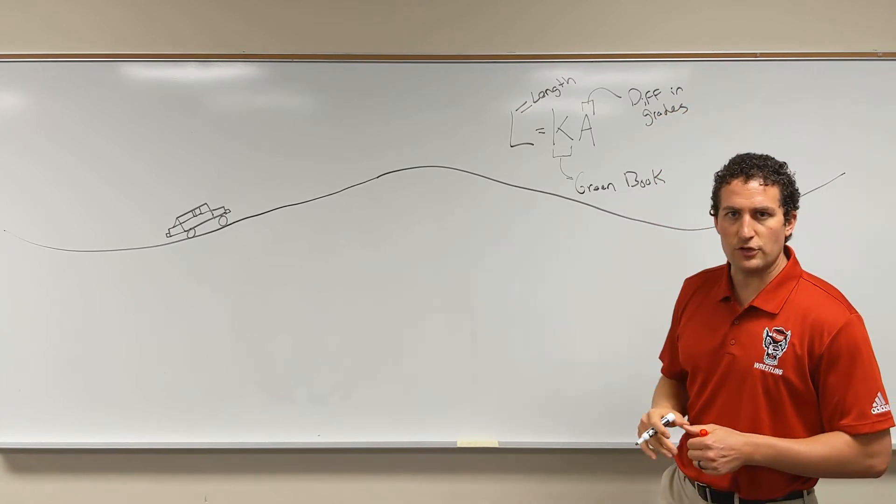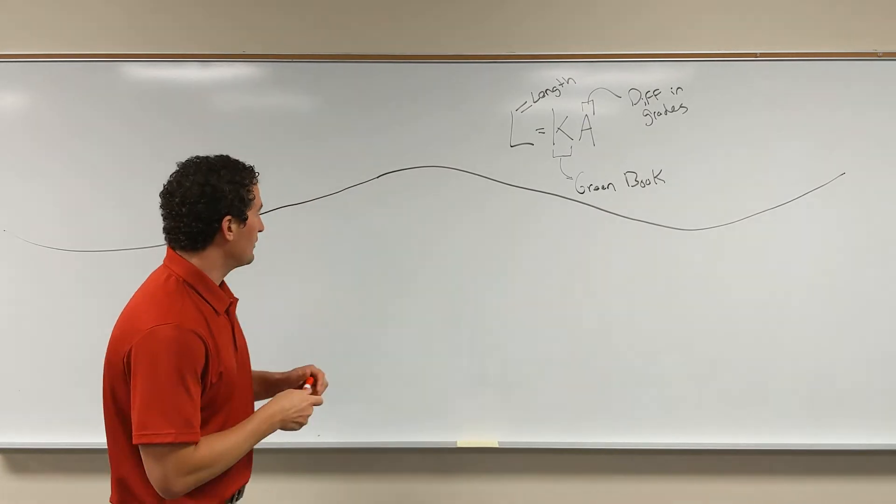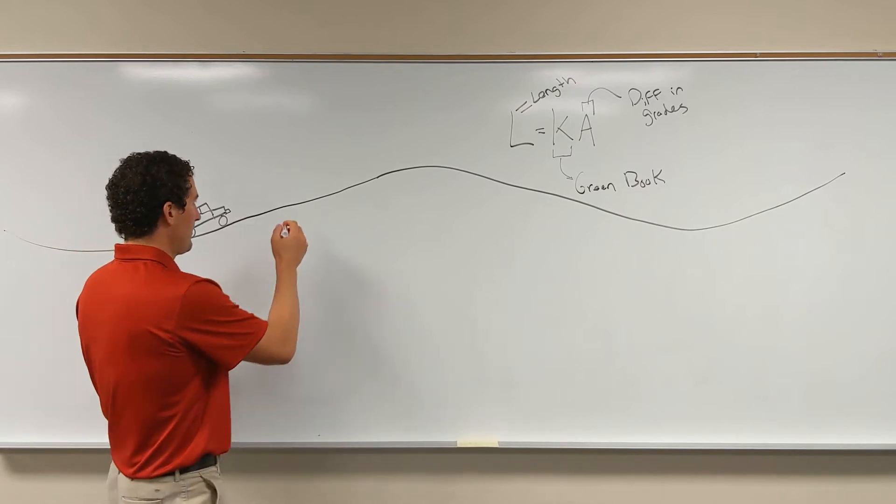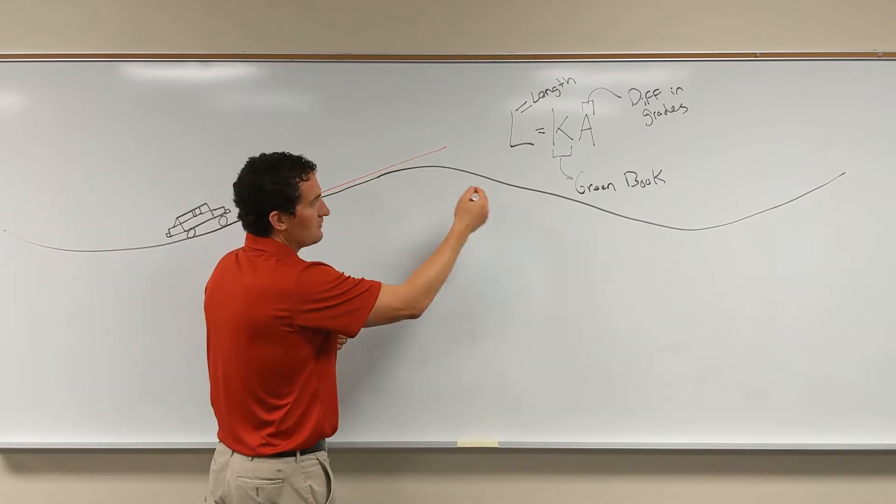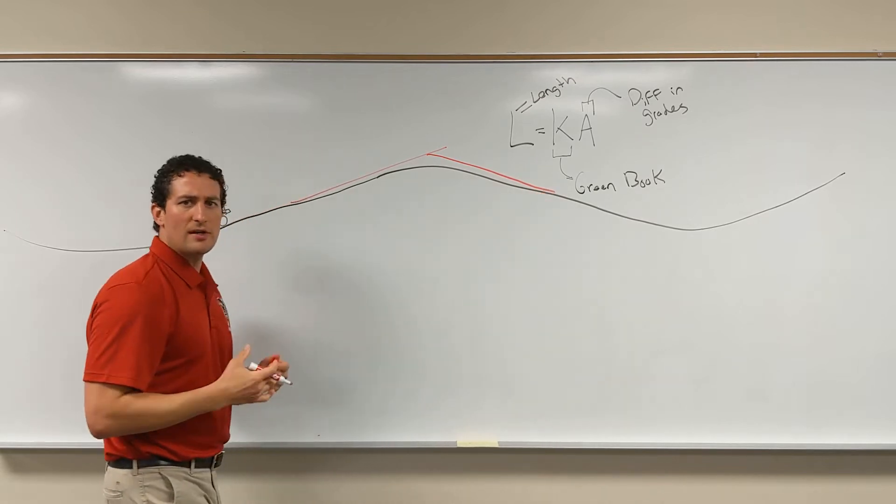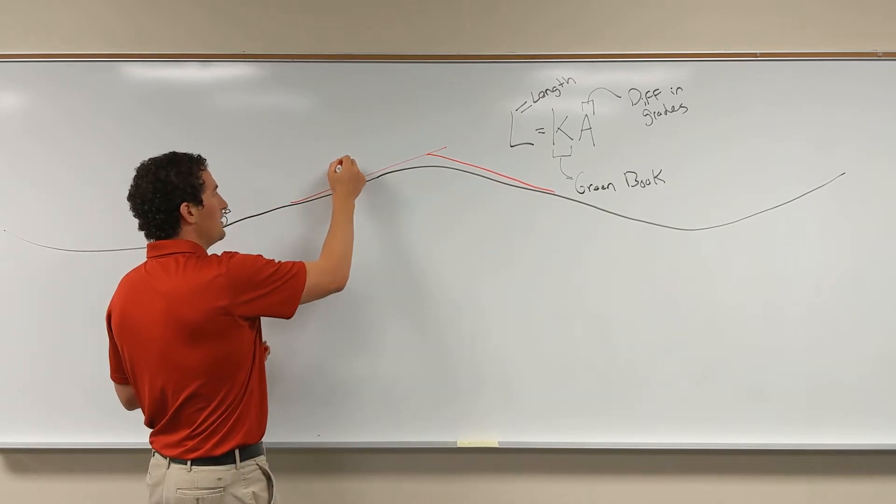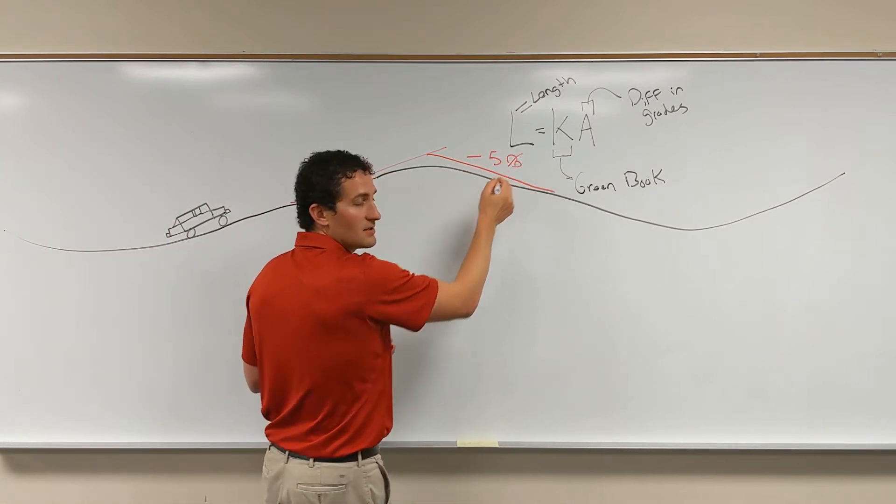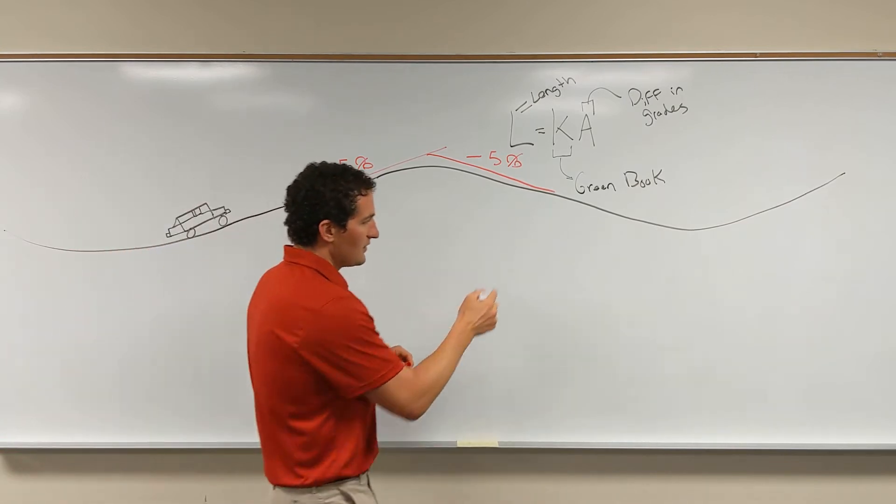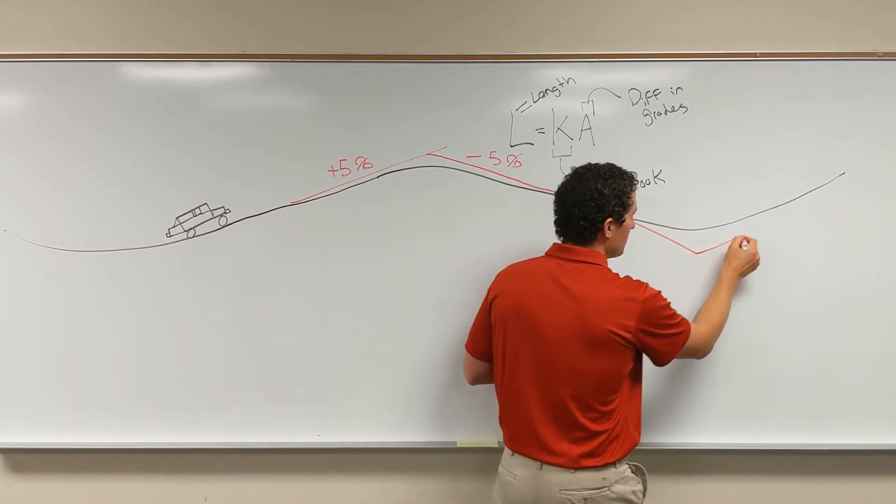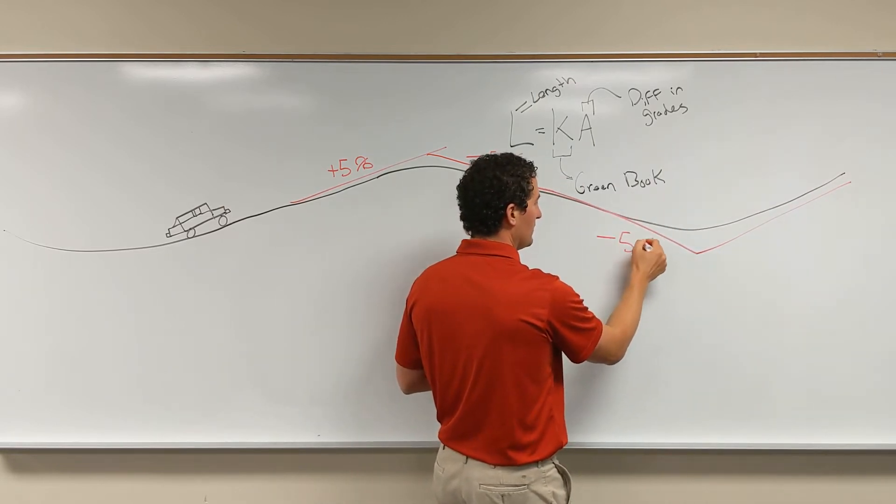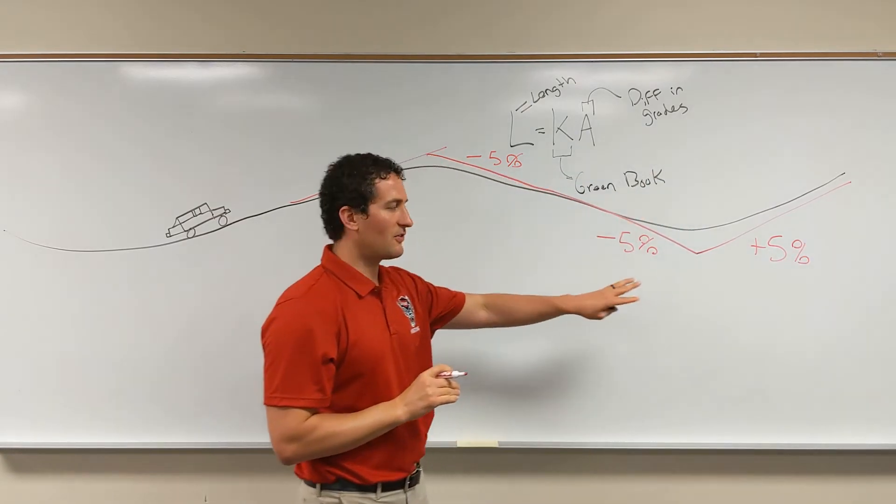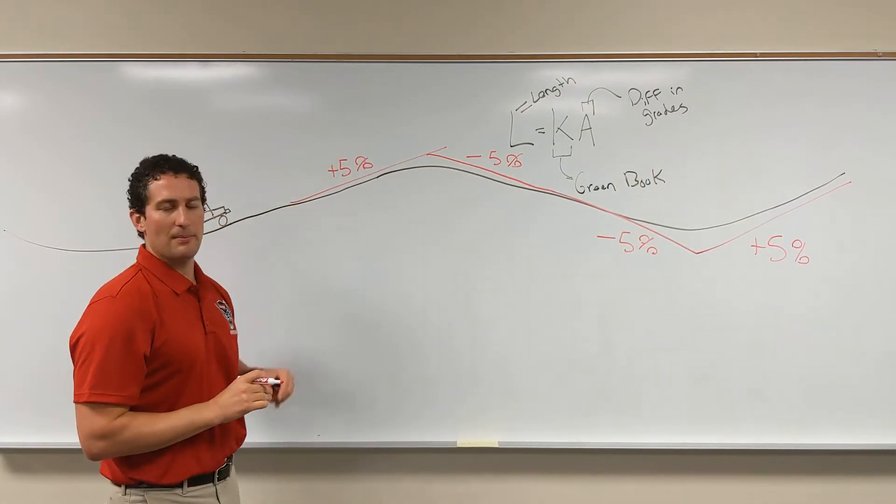Let's take a look at our drawing and talk about some examples with these values. Let's just assume that we have 5% grades, so we have a 5% upgrade that meets this 5% downgrade. The grades, the signs of the grades are very important. So we're going to have plus 5% upgrade and a minus 5% downgrade for this one.